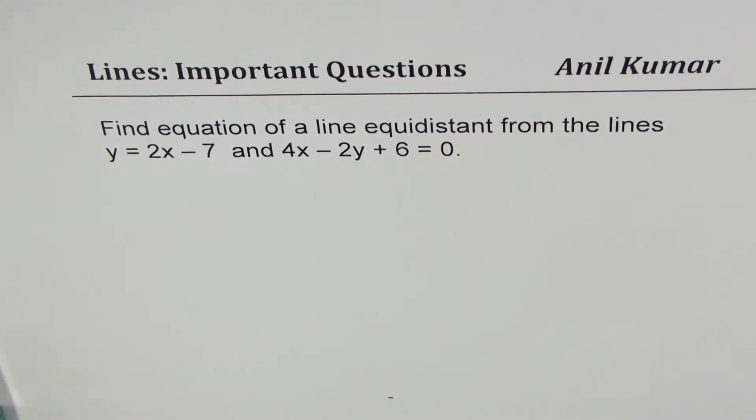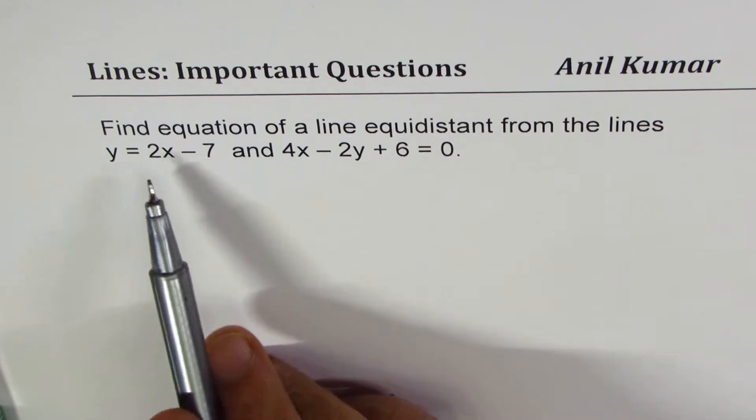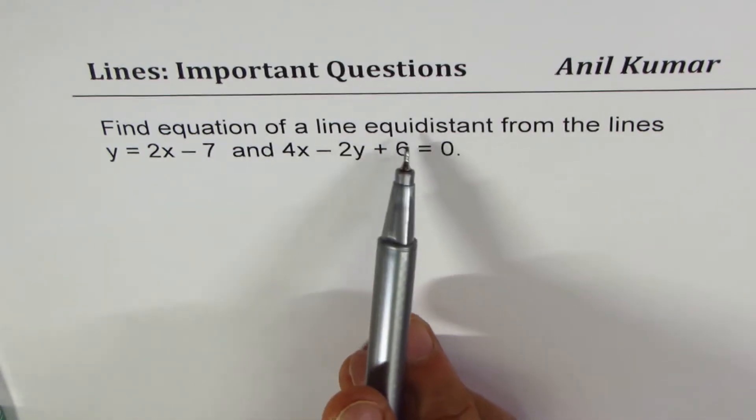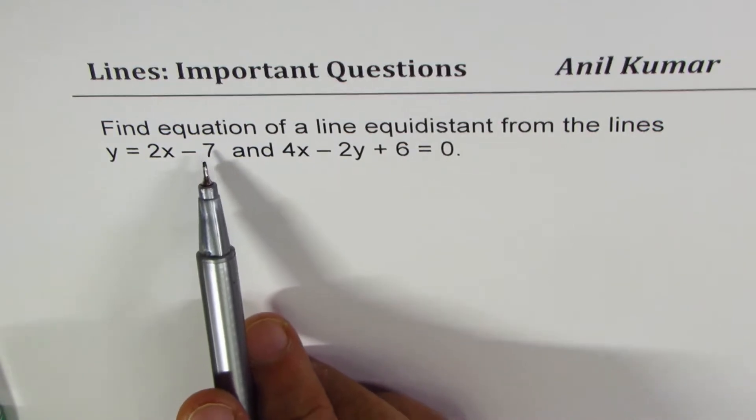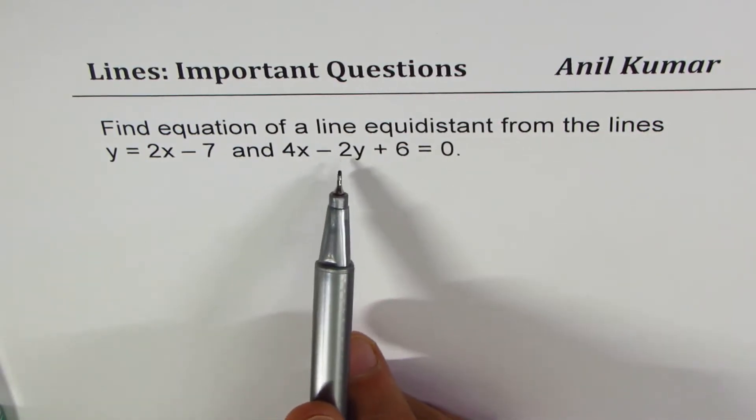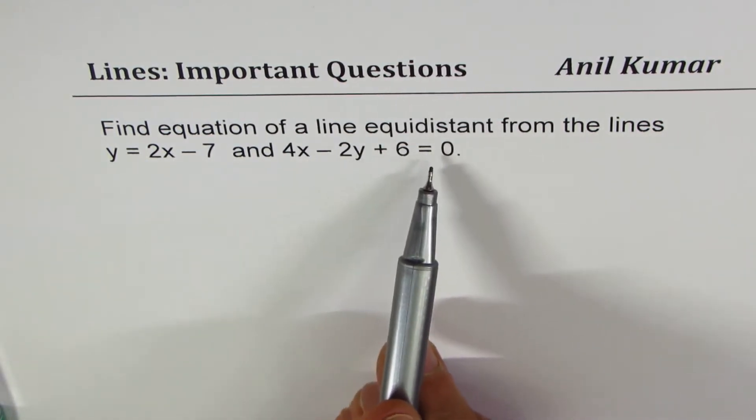I'm Anil Kumar, sharing with you a very interesting question on parallel lines. The question here is, find equation of a line equidistant from the lines y = 2x - 7 and 4x - 2y + 6 = 0.